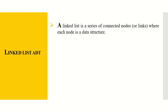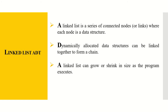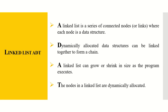A linked list is a series of connected nodes or links where each node is a data structure. Dynamically allocated data structures can be linked together to form a chain. A linked list can grow or shrink in size as the program executes, and the nodes in a linked list are dynamically allocated.